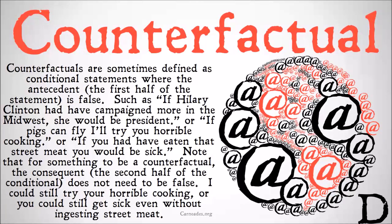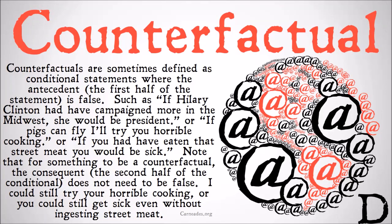Pigs can't fly, Hillary Clinton didn't campaign enough in the Midwest, and you didn't eat that street meat. Because all of those antecedents are false, that means that these are counterfactuals. Note that for something to be a counterfactual, the consequent — the second half of the conditional — does not need to also be false. I could still try your horrible cooking even if pigs are never able to fly, and you could still get sick even without ingesting street meat.